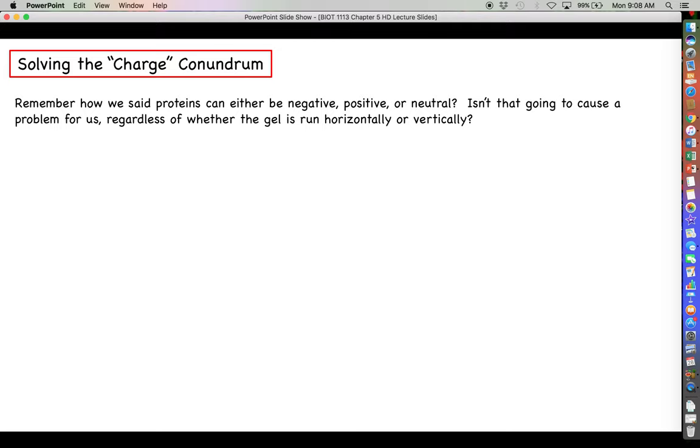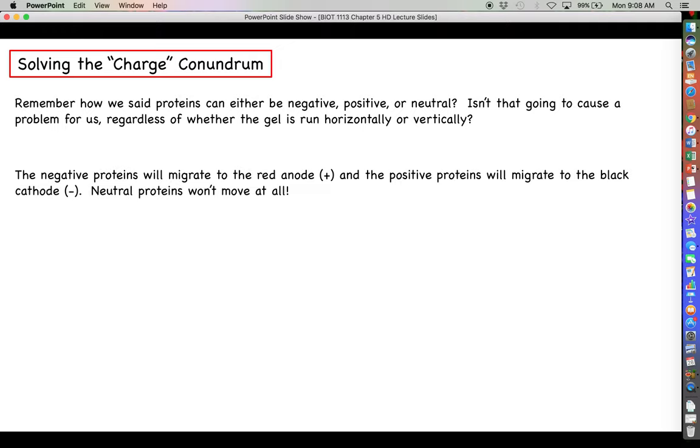The conundrum we need to solve here is what we just talked about. Proteins can either be negative, positive, or neutral. That is a big problem that we need to figure out. Isn't that going to cause us problems regardless of how we're orienting the gel and how we're running the gel? The idea is that the negative proteins will migrate to the red anode and the positive proteins will migrate to the black cathode. And the third thing is that any proteins that have no electrical charge whatsoever, they're not going to migrate at all. The proteins have to have some type of electrical charge if they're going to move with or against the current.